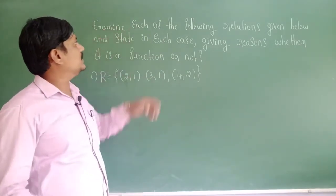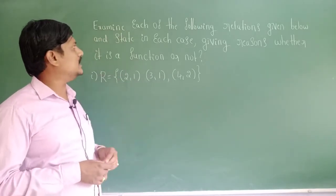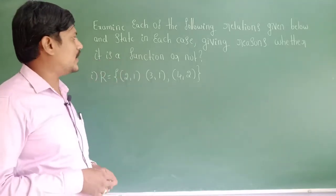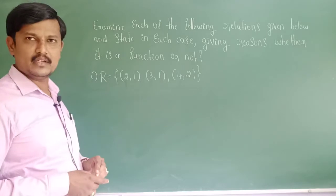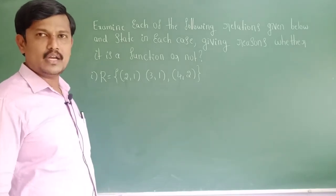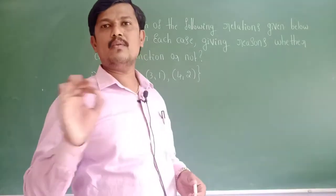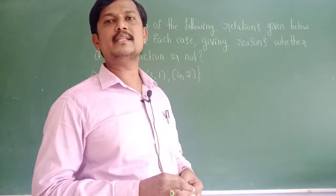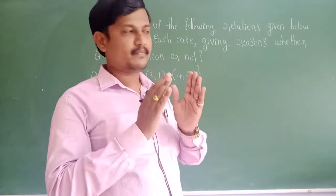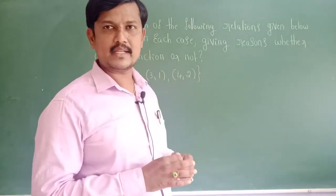First, examine each of the following relations given below and state in each case, giving a reason, whether it is a function or not. A relation R is given. We have to check whether relation R is a function or not. The meaning of function is: every element of set A has one and only one image in set B.